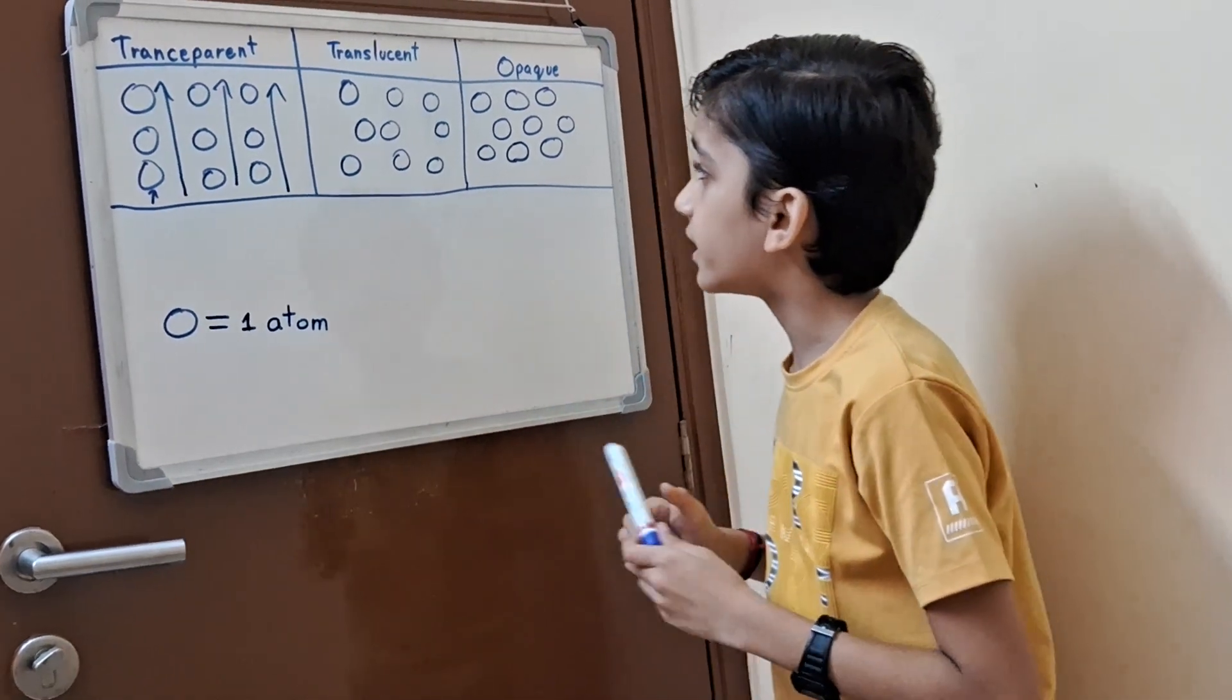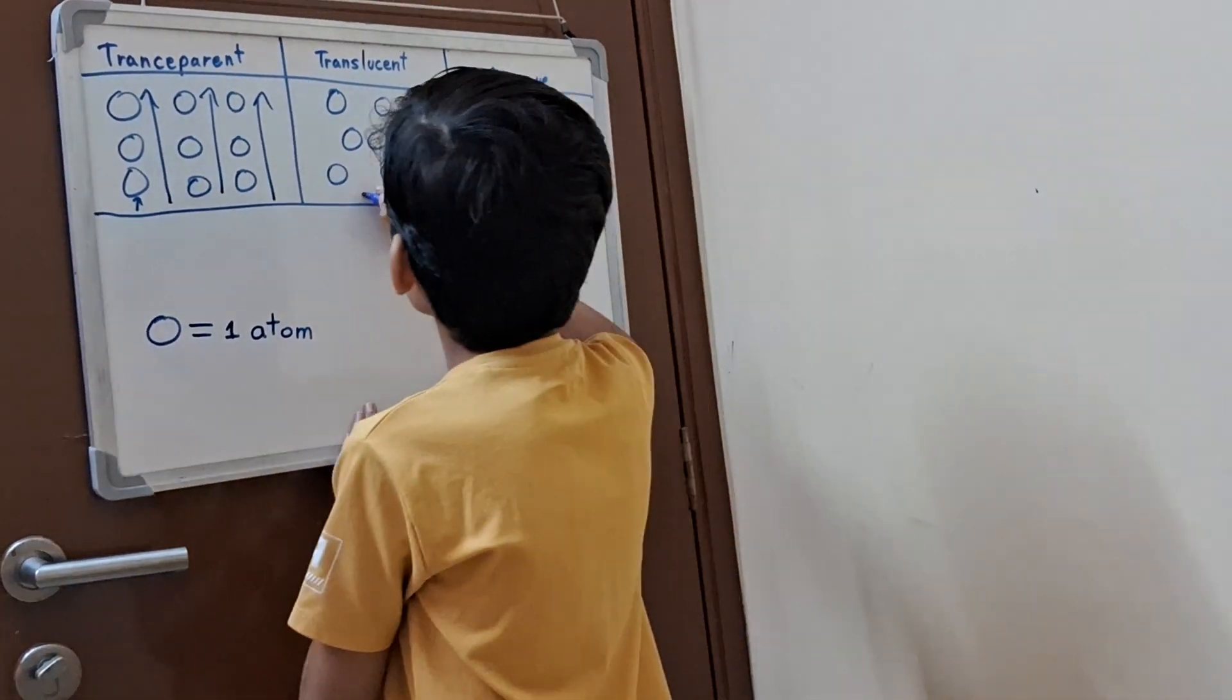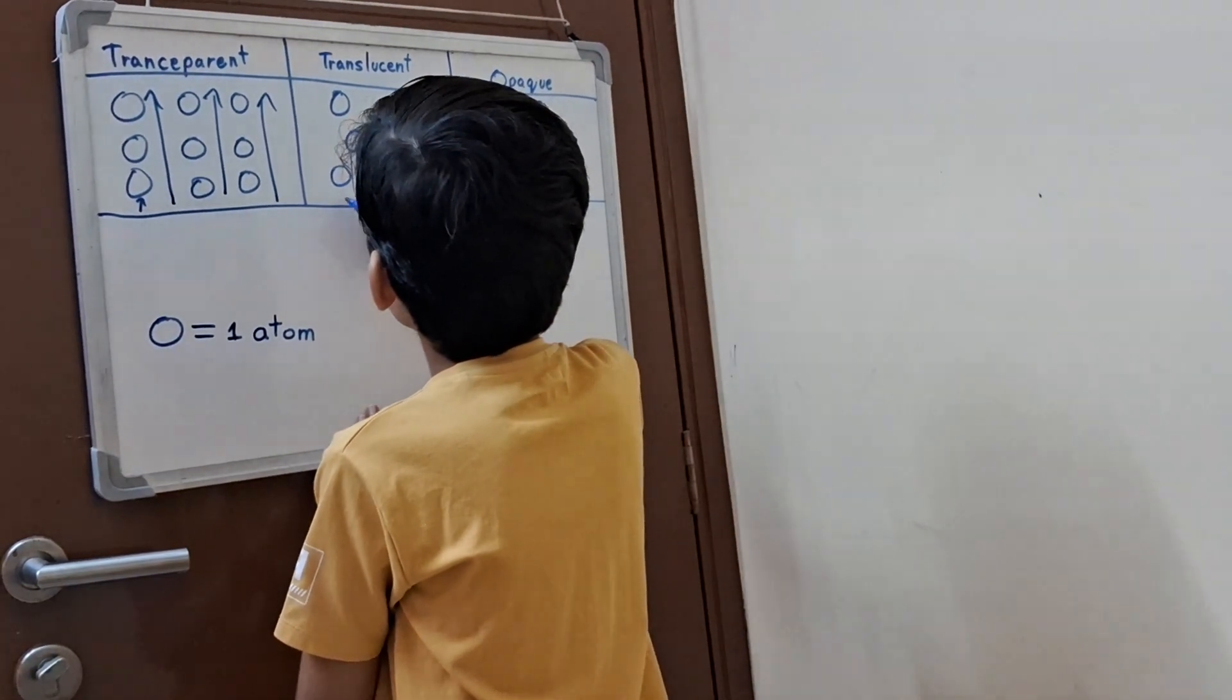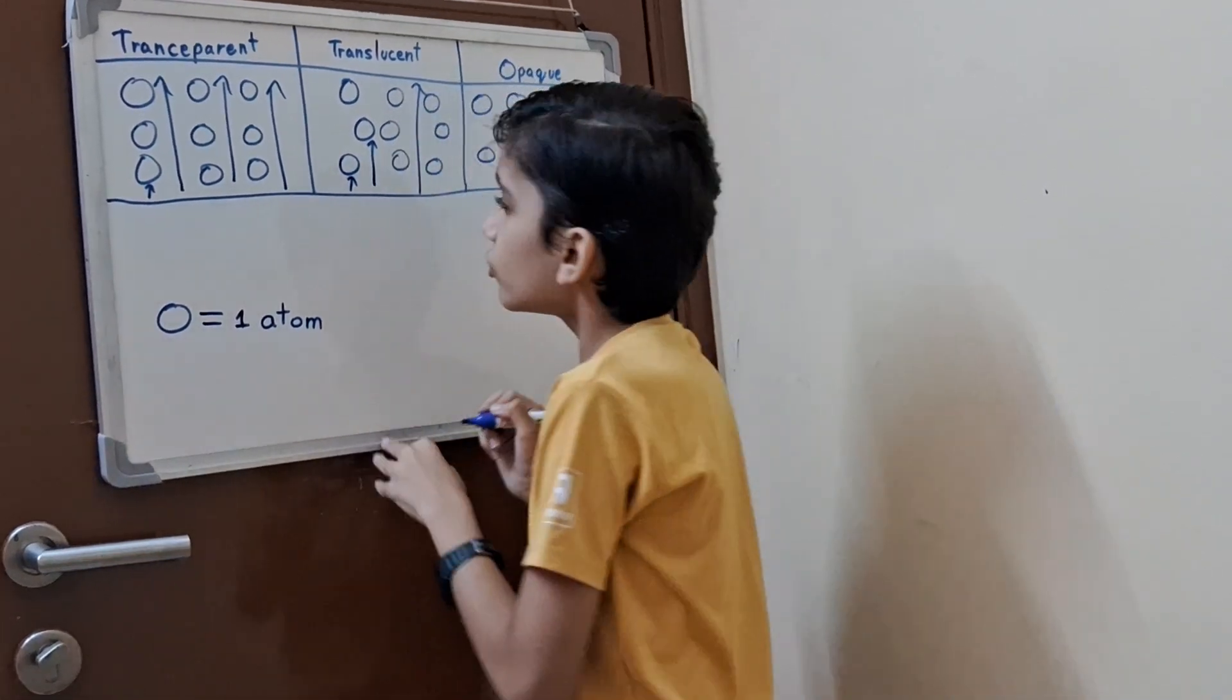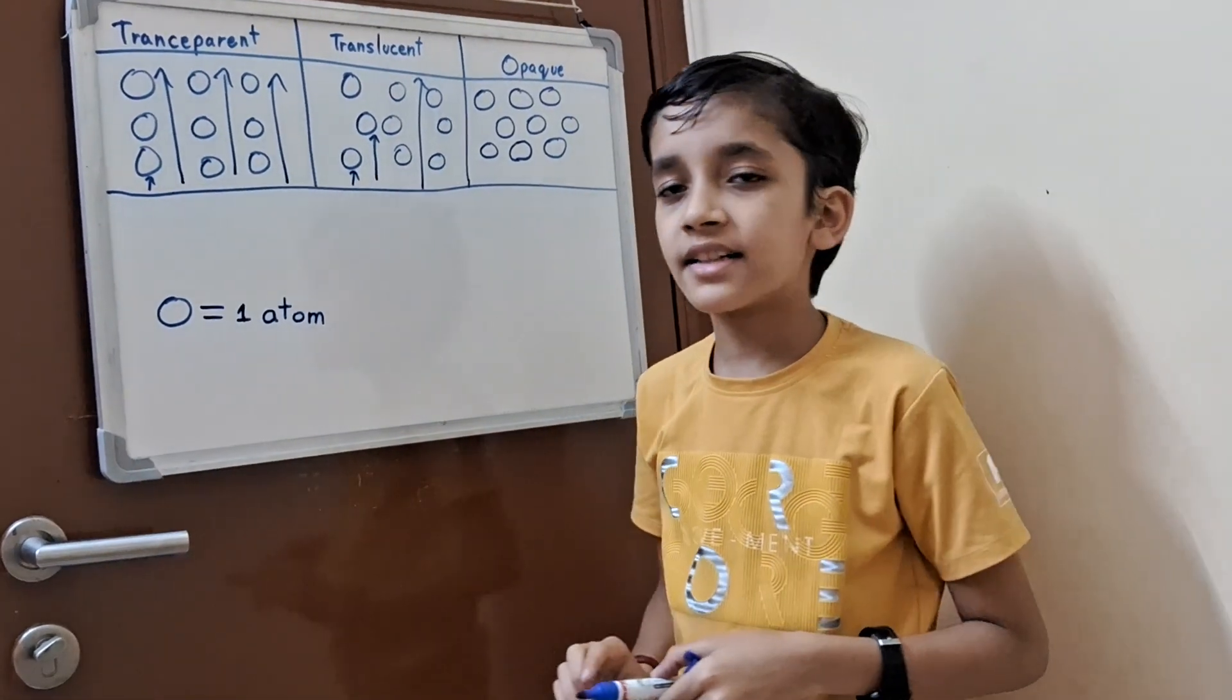Now translucent. Different blockages are coming. Like here also blockage, here also blockage, but here. So very less light could pass.